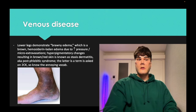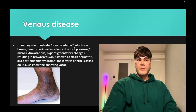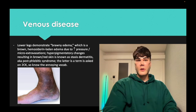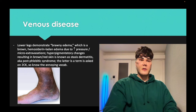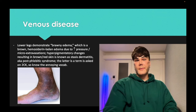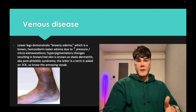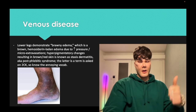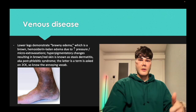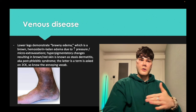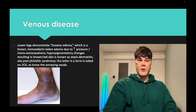Brawny edema: when you have venous disease with valvular incompetence, you'll have increased hydrostatic pressure within the peripheral veins and venules, leading to extravasation of not just fluid but hemosiderin that deposits and causes darkening of the skin over time. This can be called brawny edema, post-phlebitic syndrome, or stasis dermatitis on NBME questions — these all refer to the same skin changes.